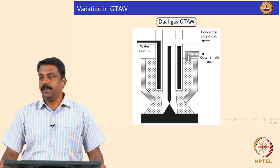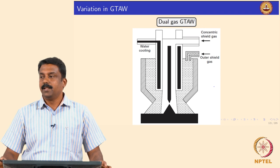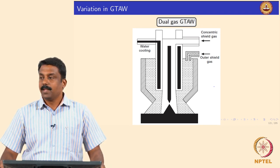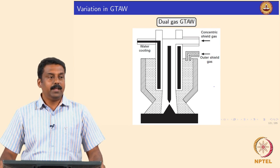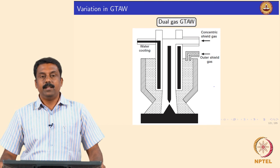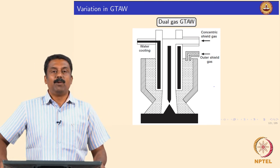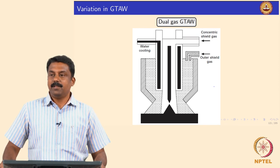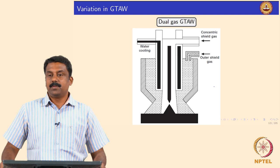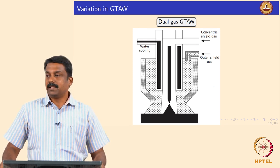We will move on to another modification. We looked at pulsed square wave DC, variable polarity DC, and then the cold and hot wire GTAW. Now we will move on to another interesting modification of GTAW which is commercially used extensively — plasma.